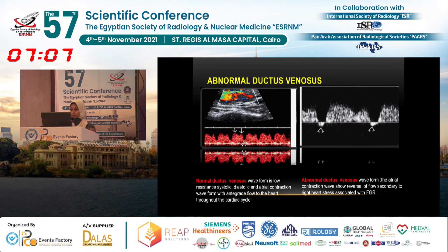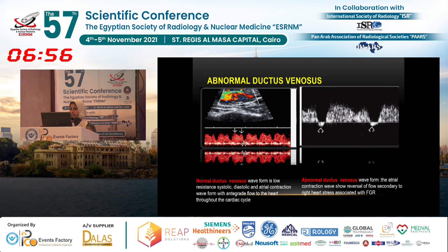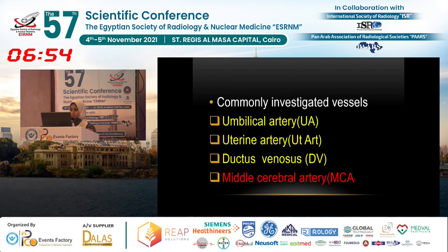What is the abnormal ductus venosus finding? The abnormality is reversal of the A-wave. This indicates the presence of right heart stress leading to reversal of the A-wave, as seen in this case.